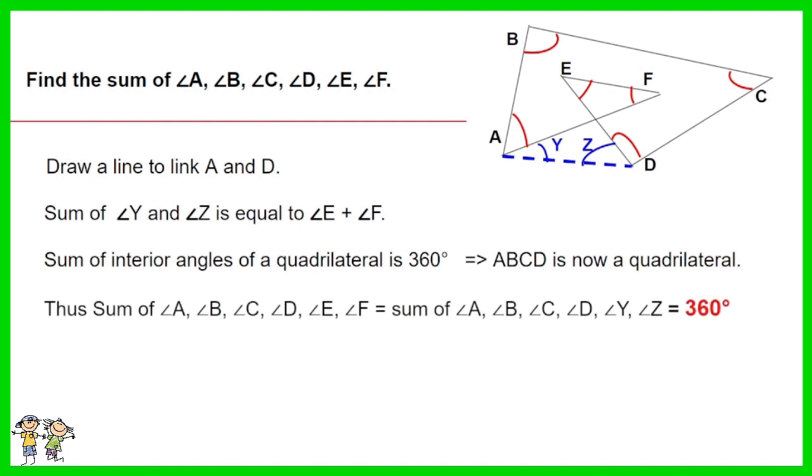Thus sum of angle A, angle B, angle C, angle D, angle E, and angle F is equal to sum of angle A, angle B, angle C, angle D, angle Y, angle Z. The answer is 360 degrees.